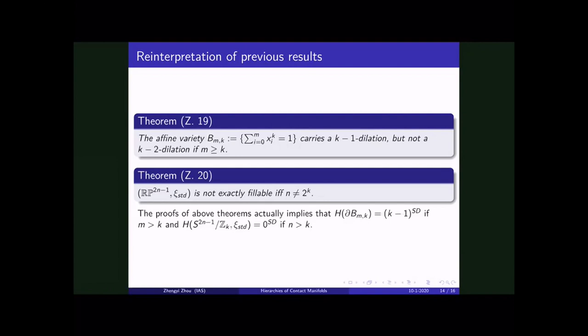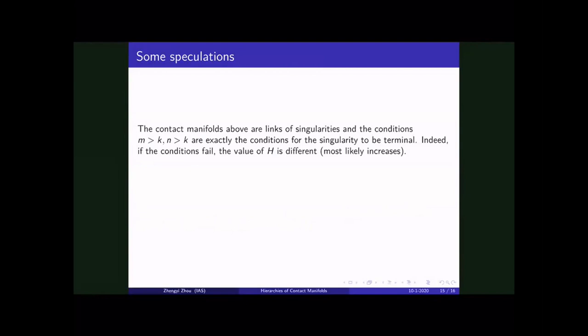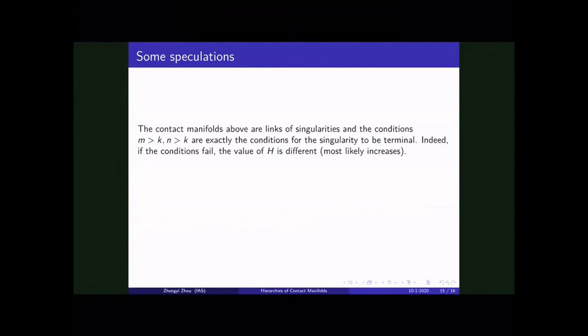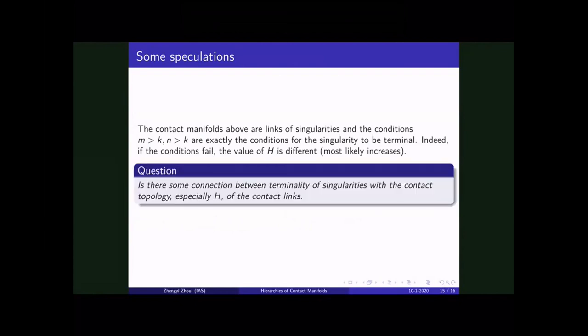And I want to end this talk with some speculations I found very interesting. The examples here, contact manifolds are actually links of singularities. And the conditions N bigger than K and N bigger than K are exactly the condition for the singularity to be terminal. Indeed, if the condition fails, the singularity stops being terminal, the value of H will be different and most likely it will increase. So the question I want to raise is there some connection between terminality of singularities with contact topology, especially this functor H of the contact links. That would be all. Thank you.